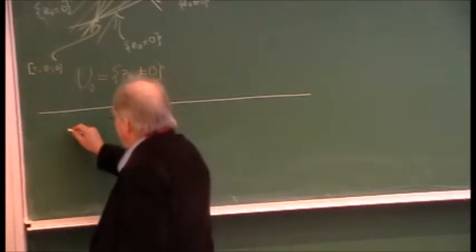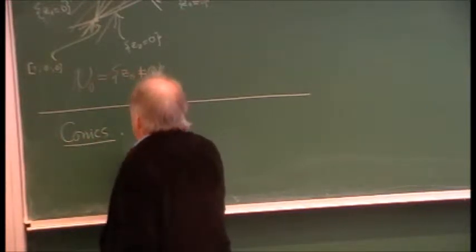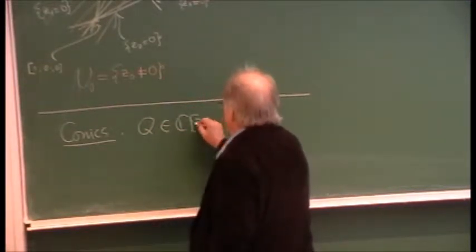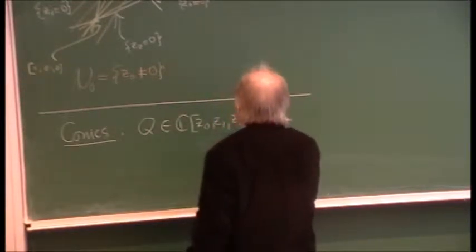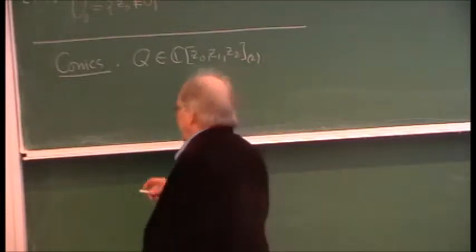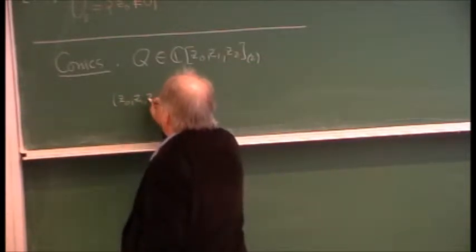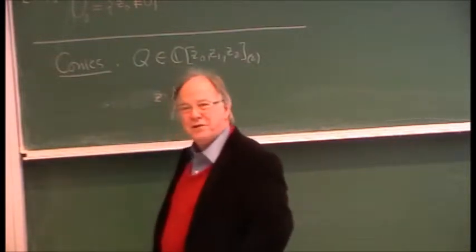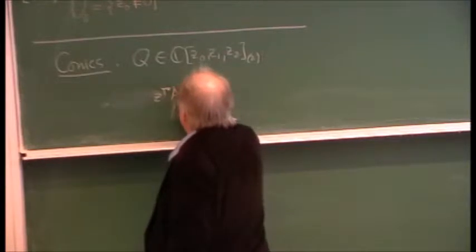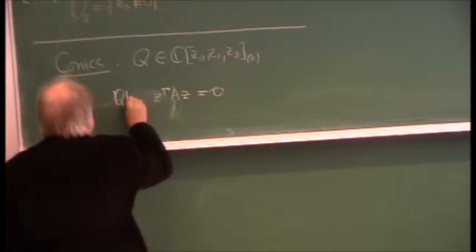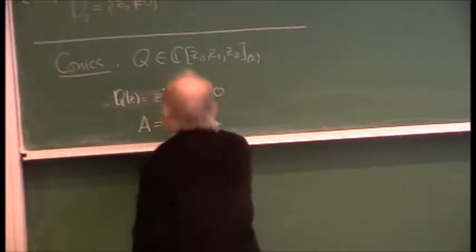The quadratic phenomenon — these things are called conics. A conic Q, a quadratic form, is an element of the second gradation. As you all know, any quadratic polynomial should be written as a symmetric matrix. It's the zero set of a quadratic form written as z^T A z, using a symmetric matrix.